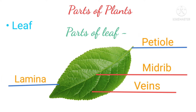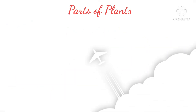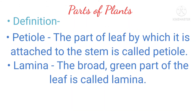This is the picture of leaves with its parts. The part of the leaf by which it is attached to the stem is called the petiole. The broad green part of the leaf is called the lamina.